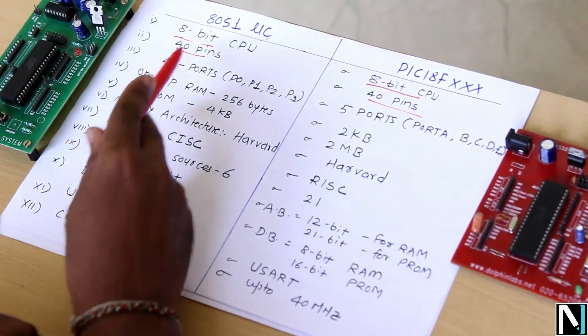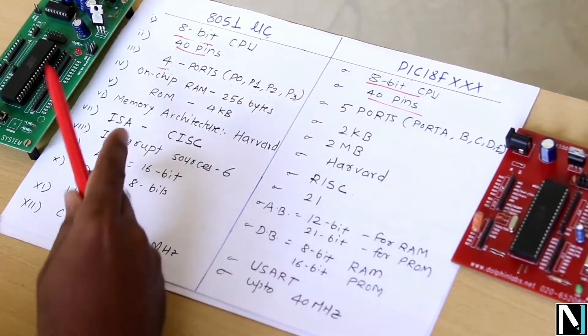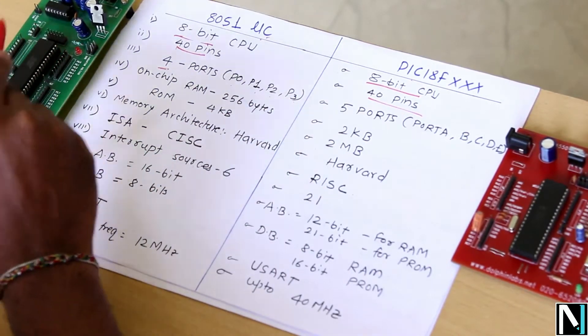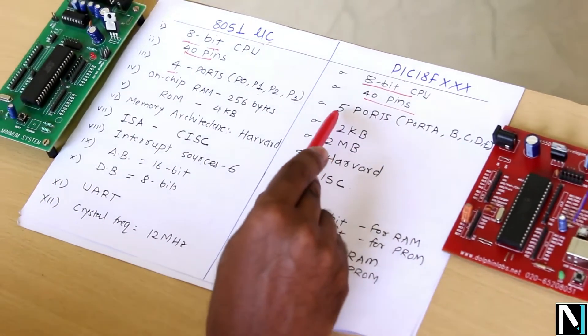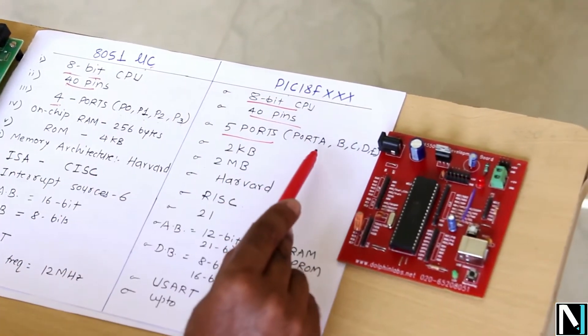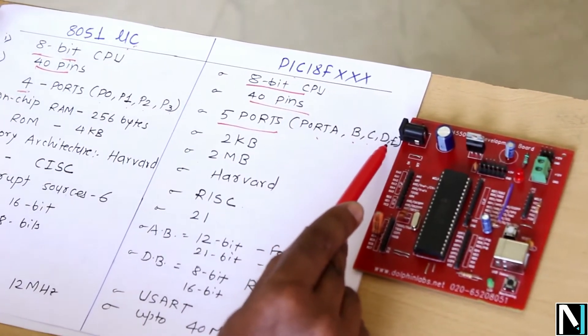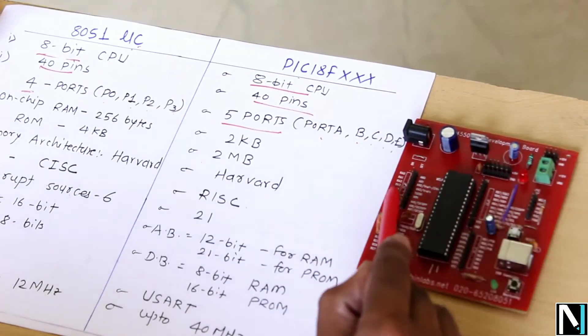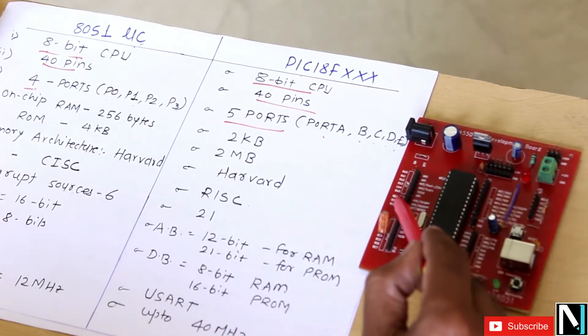In the comparison, 8051 has four ports: P0, P1, P2, and P3, while your PIC 18F has five ports. The name of the ports are port A, B, C, D, and E.